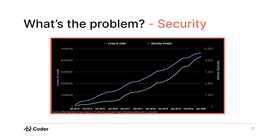We need to eliminate the manual processes and work smarter. This is where the idea of DevOps and DevSecOps comes in — to start automating these processes, helping us detect security threats earlier and helping our developers find out about them. That brings us to this idea of shifting left.